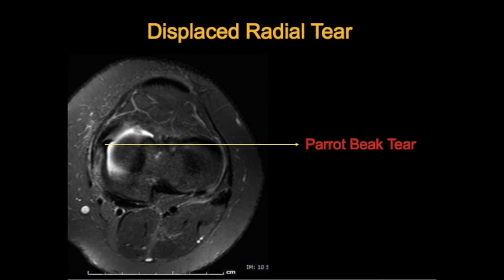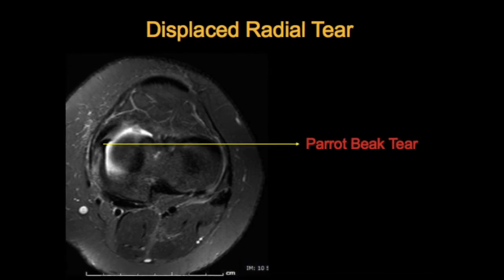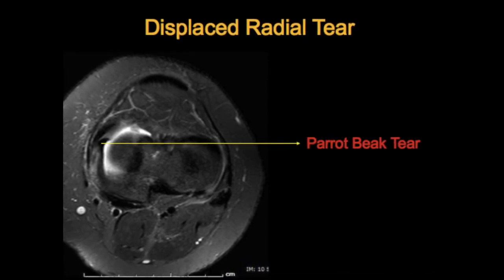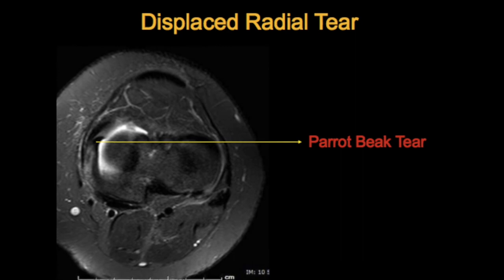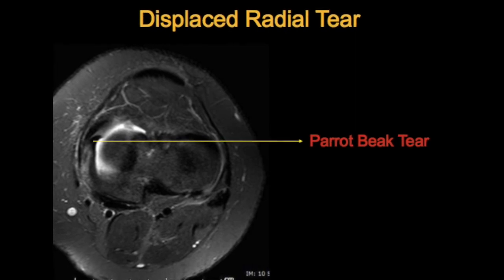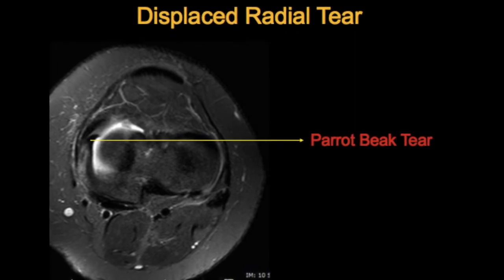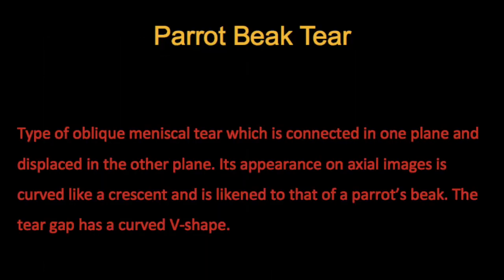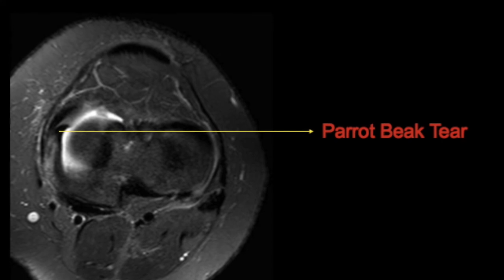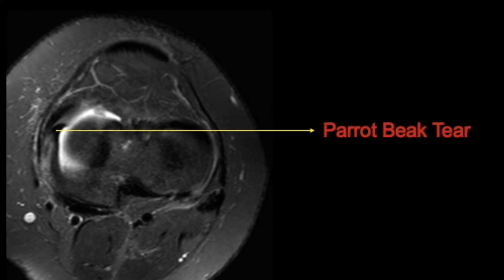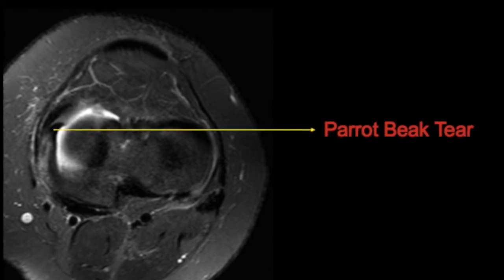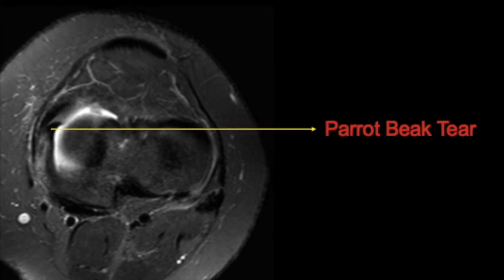Finally, the displaced radial tear — whenever a radial tear extends and forms a parrot beak appearance, this is a displaced radial tear or parrot beak tear, which is best seen in the axial images.